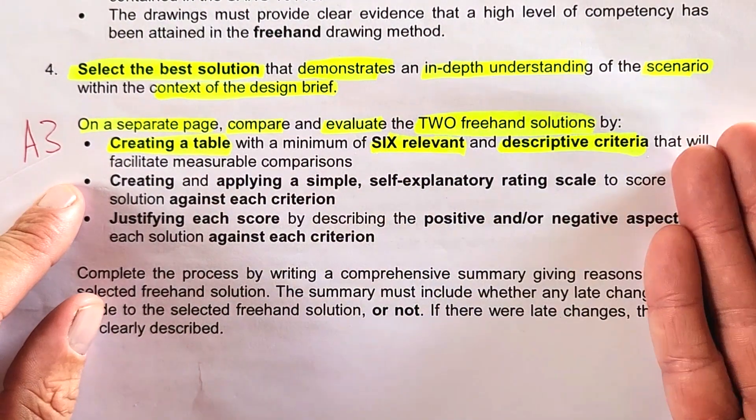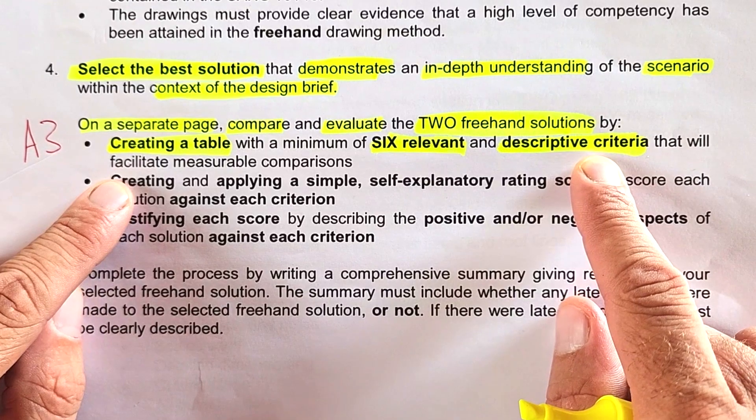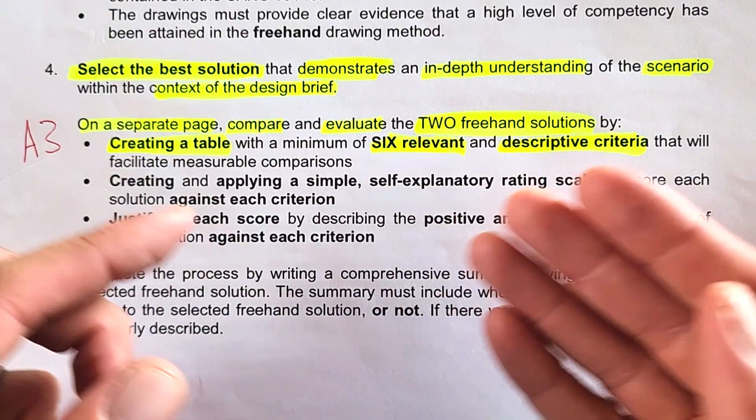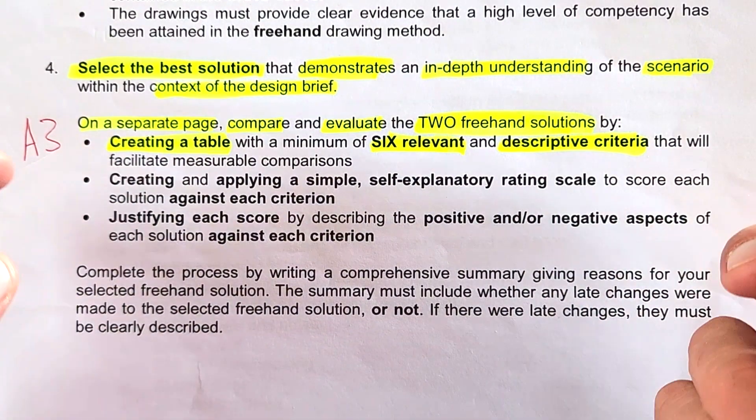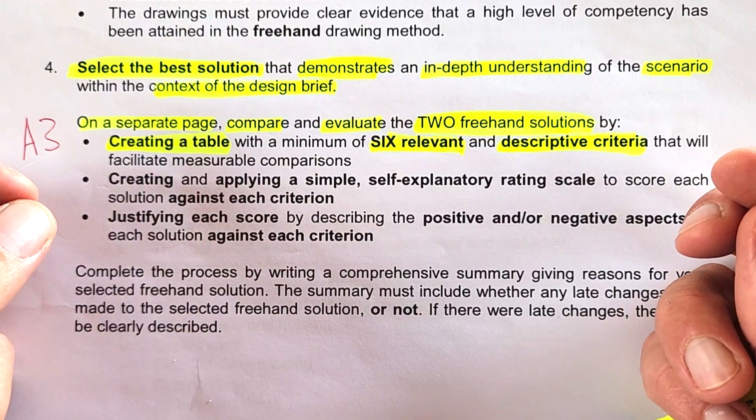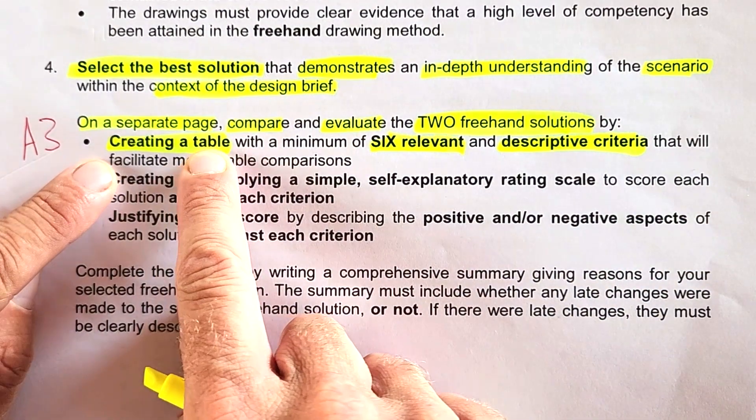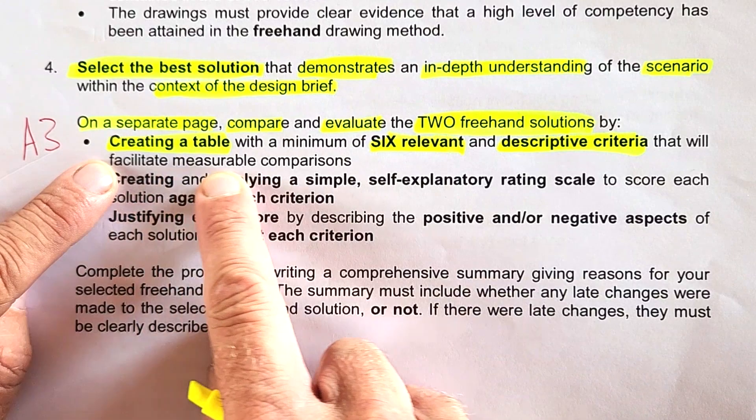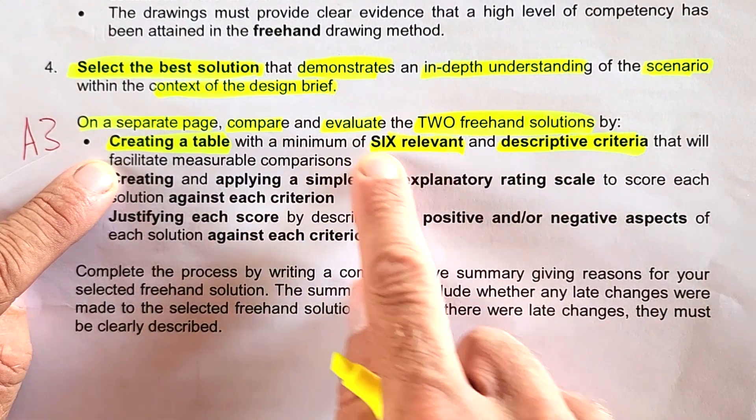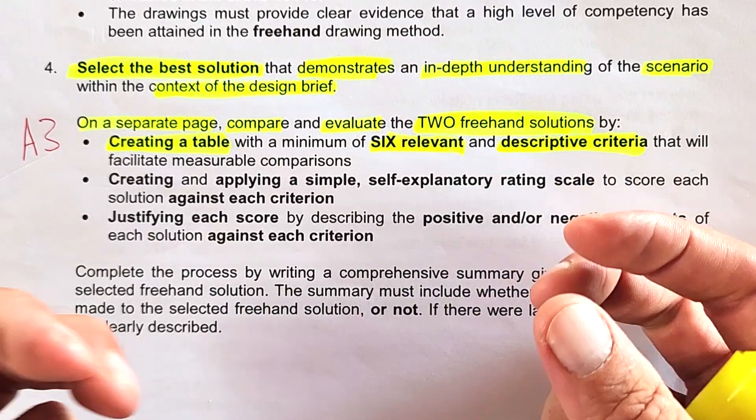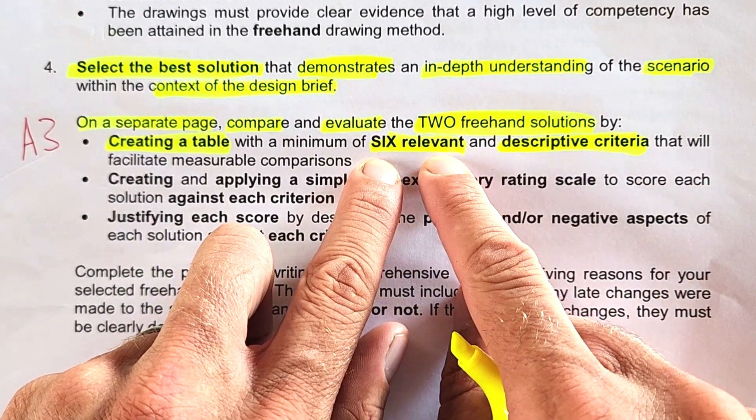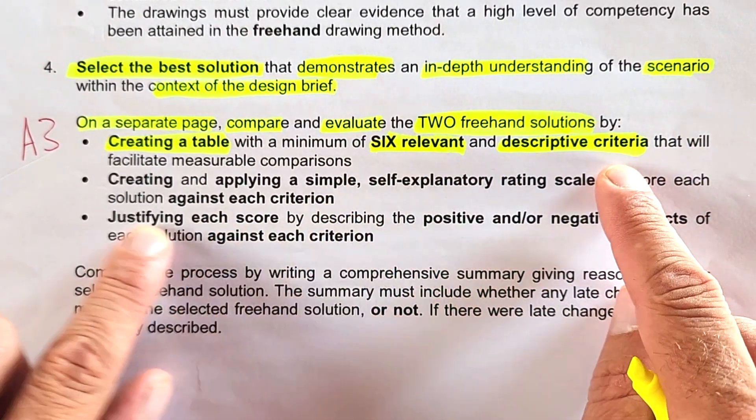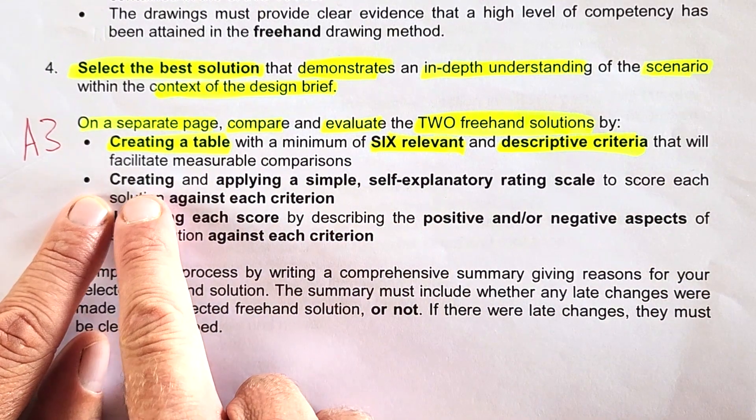Another example would be the conference rooms. The two smaller ones have to have a stacking door between them so they open up for a larger room. That's a descriptive criteria. You can come up with a table that lists six relevant descriptive criteria, not just a single word, facilitating measurable comparisons. Try and zoom in on the six key criteria. Some of them are less prominent, but try to find six prominent relevant descriptive criteria, some I've already mentioned.